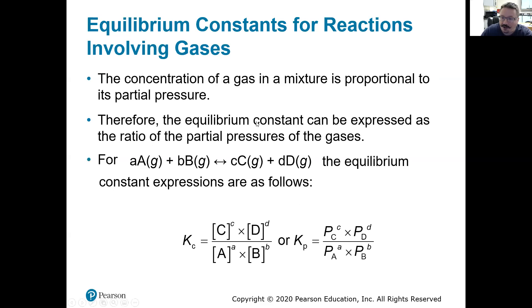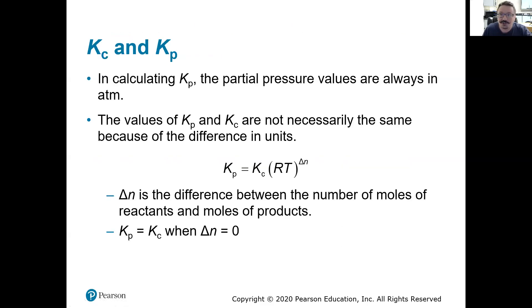And if we had all those values, if we had the partial pressures of C, D, A, and B, we could just plug them in, and we would know our K sub P. But is there a relationship between K sub C and K sub P? Yes, there is. So if we only knew the equilibrium constant with respect to concentration, could we find the equilibrium constant with respect to pressure or vice versa? Yes.